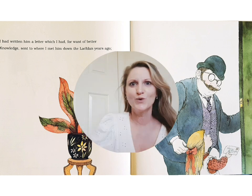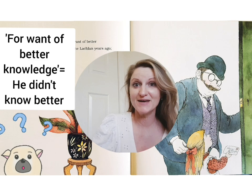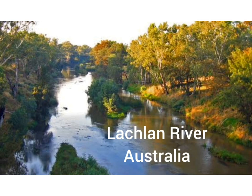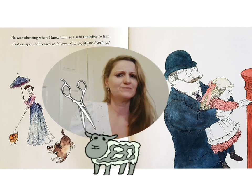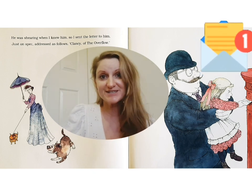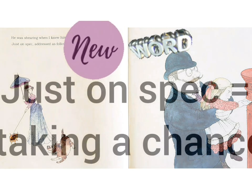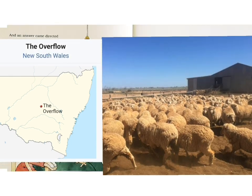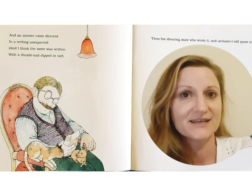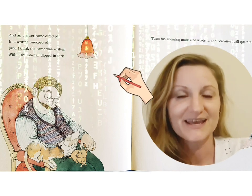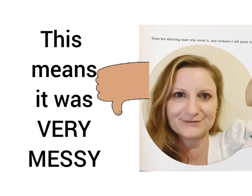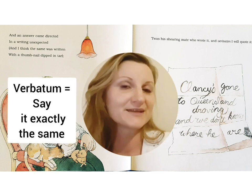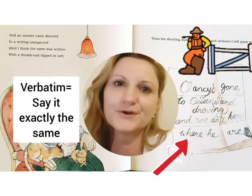'I had written him a letter which I had for want of better knowledge sent to where I met him down the Lachlan years ago. He was shearing when I knew him, and so I sent the letter to him, just on spec, addressed as follows: Clancy of the Overflow. And the answer came directed in a writing unexpected, and I think the same was written in a thumbnail dipped in tar. 'Twas his shearing mate that wrote it, and verbatim I will quote it: Clancy's gone to Queensland droving and we don't know where he are.'